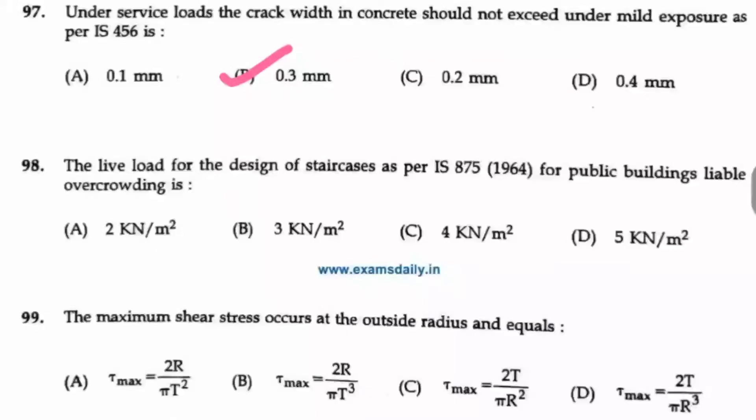Question number 98, the live load for the design of staircases as per IS 875 for public buildings liable to overcrowding is dash. So option D, 5 kN per m squared.